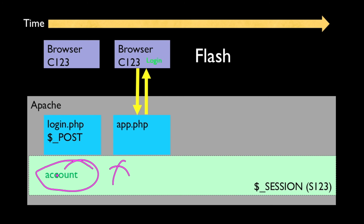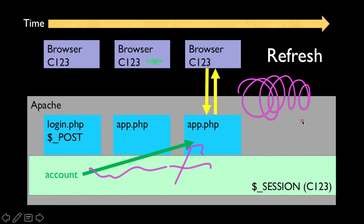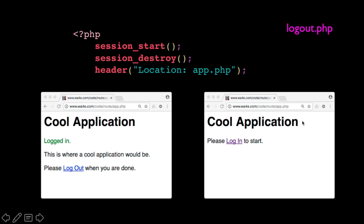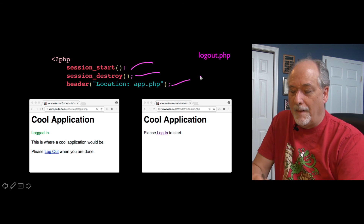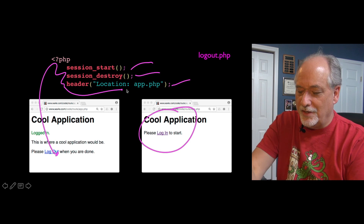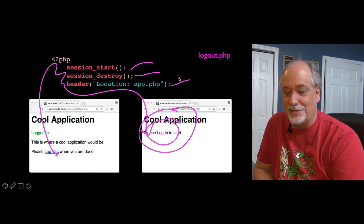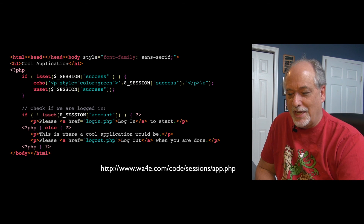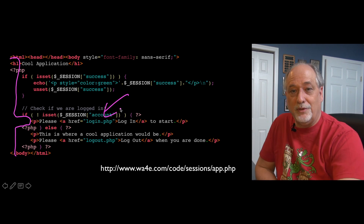As many times as you go back to app.php, account is still in the session, so you stay logged in. The most fun code to write is logout, and it almost always looks the same: start the session, throw away all the keys in the session, and redirect back to app.php. Now it says 'log in' because account is no longer in the session. You press logout, go through the code, and come back to the same file showing the logged-out state because the session was destroyed.